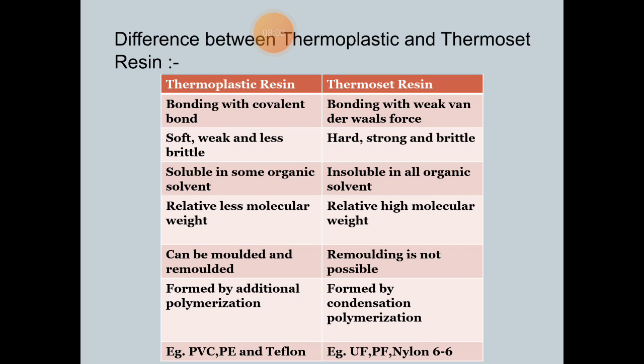Thermoplastics are formed by addition polymerization, while thermosets are formed by condensation polymerization. Examples of thermoplastics include PVC pipe, LDPE, and Teflon. Examples of thermosets include urea-formaldehyde (UF), phenol-formaldehyde (PF), and Nylon-66. In this way, we have classified these two terms: thermoset and thermoplastic resins.